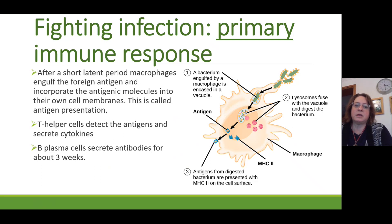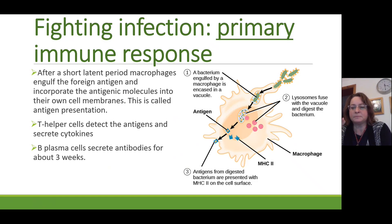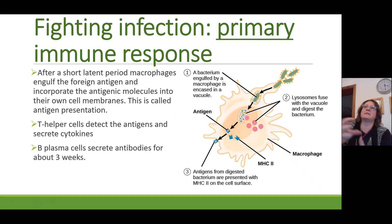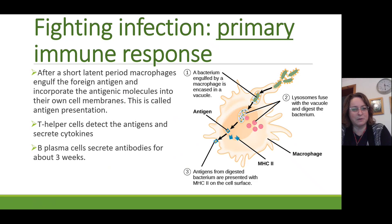It's a complex process: the macrophage engulfs the pathogen, and the pathogen is starting to be taken to pieces and digested. However, one or two antigens - those surface markers, whatever glycoproteins or glycolipids they are - get embedded in a particular protein that attaches and allows presentation of that antigen on the surface of the cell. This signals to T helper cells and B plasma cells that's the antigen they need to fight. The T helper cells then direct things by secreting cytokines, and the B plasma cells produce and secrete the right antibodies for about three weeks.